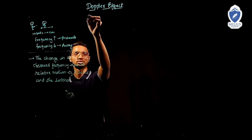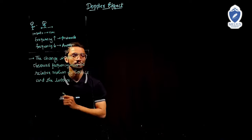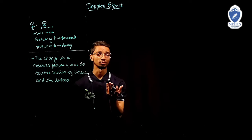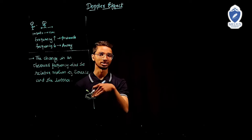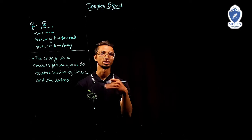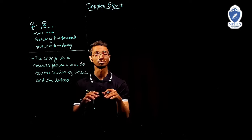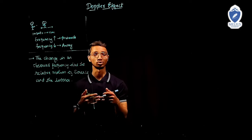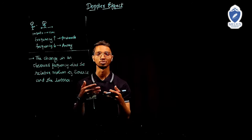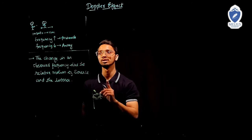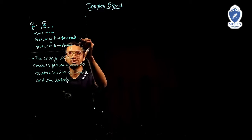Everyone will have confusions in its formula — how to write it. There are many cases: observer is at rest and source is moving; source is at rest, observer is moving; when both are moving towards each other; both are moving away from each other; one is moving towards and one is moving away. To understand that concept, we need to understand the basic principle first.